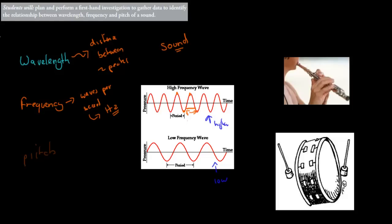And we said pitch was connected to frequency. So if we have a high pitch sound, that would usually mean we have a high frequency as well — high frequency produces high pitch. Whereas low pitch is produced by a low frequency, so that means a longer wavelength.